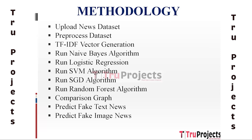The third module is TF-IDF Vector Generation. After pre-processing, the text data is converted into numerical vectors using the Term Frequency–Inverse Document Frequency (TF-IDF) algorithm. TF-IDF represents each word in the news articles as a numerical value capturing both its frequency in the article and its rarity across the entire dataset. This transformation converts the text data into a format suitable for machine learning models to process.